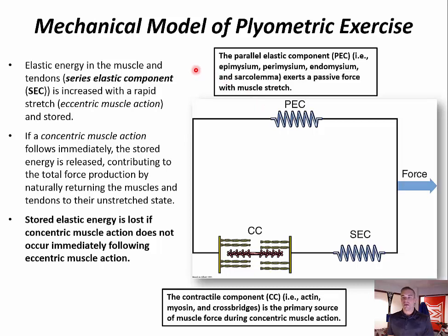In the mechanical model, elastic energy in the musculotendinous components is increased with a rapid stretch, also known as an eccentric muscle action, and then stored. If a concentric muscle action follows immediately, the stored energy is released, contributing to the total force production by naturally returning the muscles and tendons to their unstretched configuration.